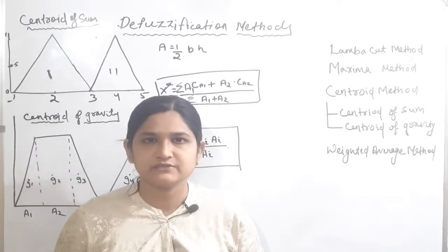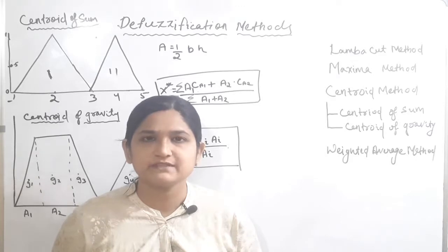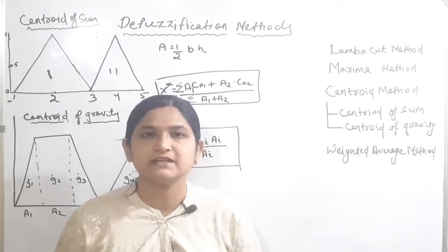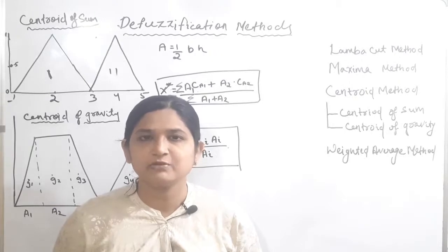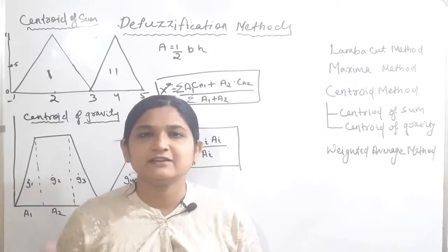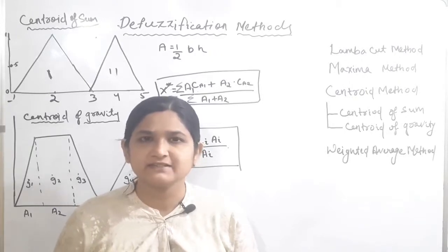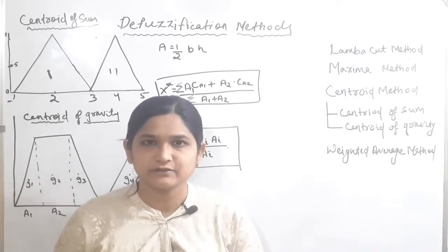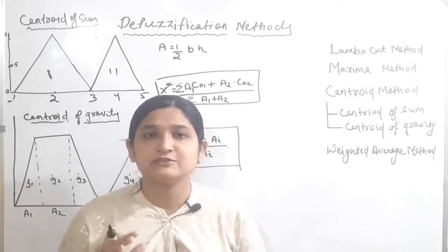Hello and welcome to Reynolds Engineering. In today's session we'll be discussing defuzzification methods. In the previous session we discussed the lambda cut method and maxima method. Today's session we'll be discussing centroid method and weighted average method. Centroid method is again divided into two types: centroid of sum and centroid of gravity.